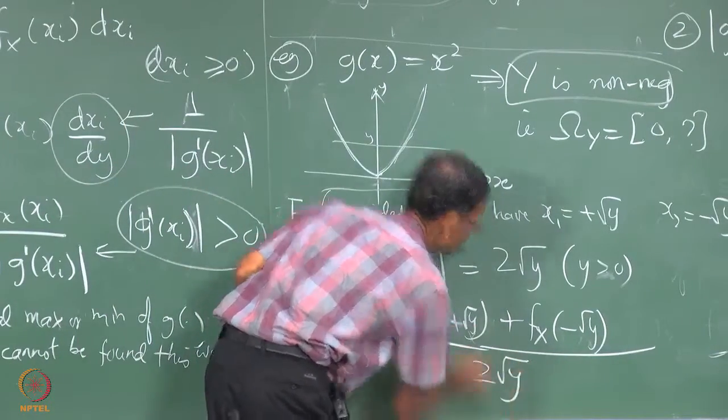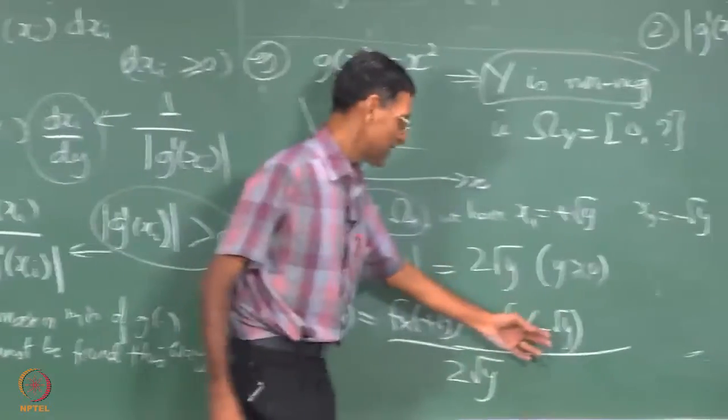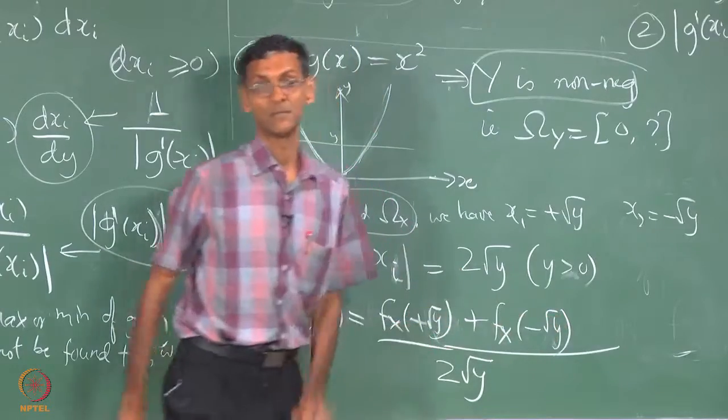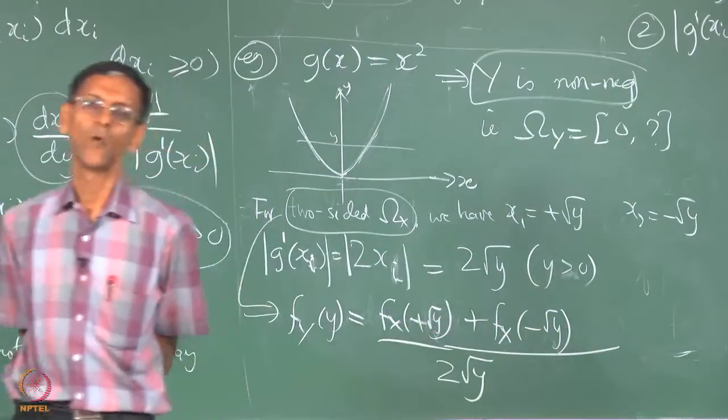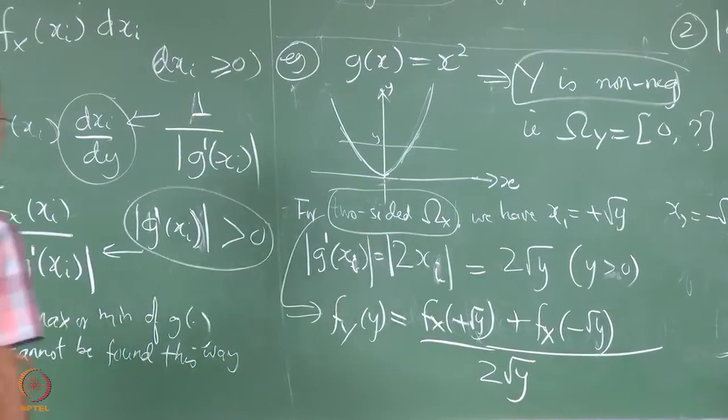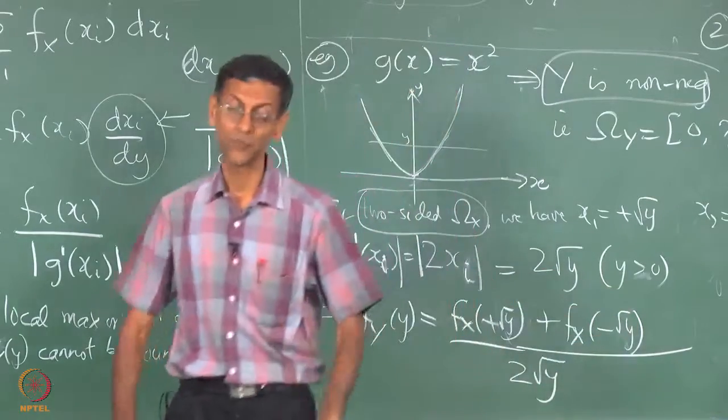If you do not have a 2 sided omega_X then this is going to become 0 anyway or this will drop out and you will only have this. So please watch out for that. Do not apply this formula and then forget about this term.